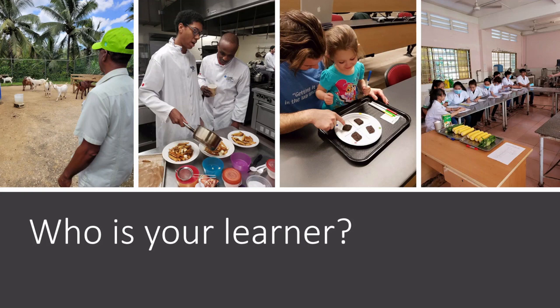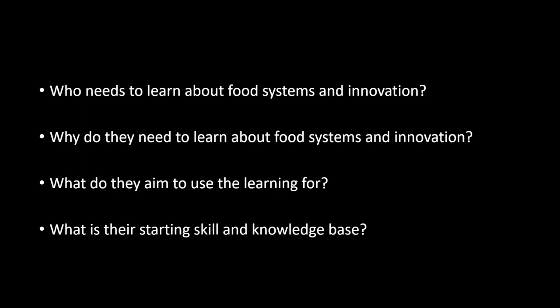When we're thinking about taxonomy, we're organizing learning into meaningful pathways and progressions so that the learner is able to effectively assimilate what we're delivering. It really begs the question: who is that learner? Is it a child? An adult learner? A person in the workforce needing professional development? A teacher in professional development? Each of these learners has a different space, time, and starting point in the learning process. We have to think deliberately about who needs to learn about food systems and innovation, why they need to learn it, and what their starting skill and knowledge base is.